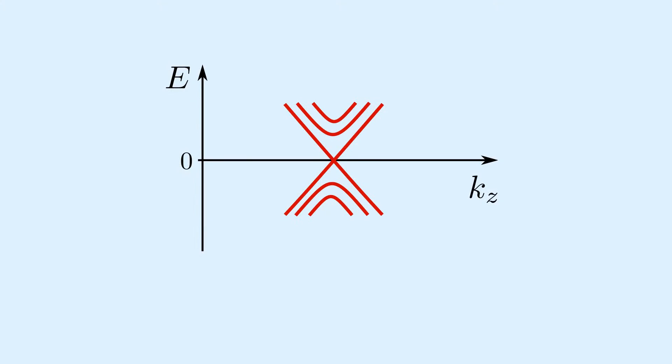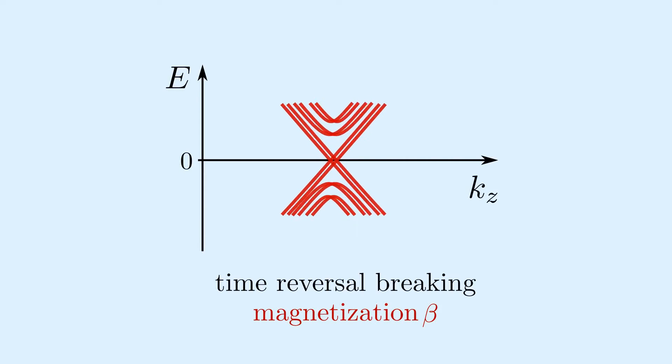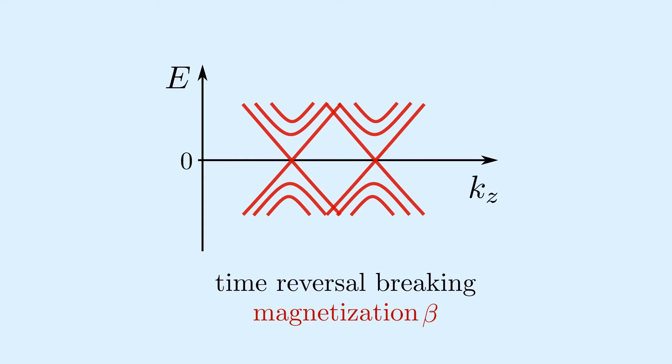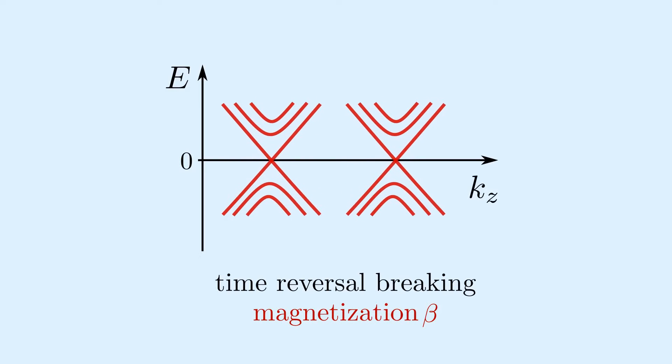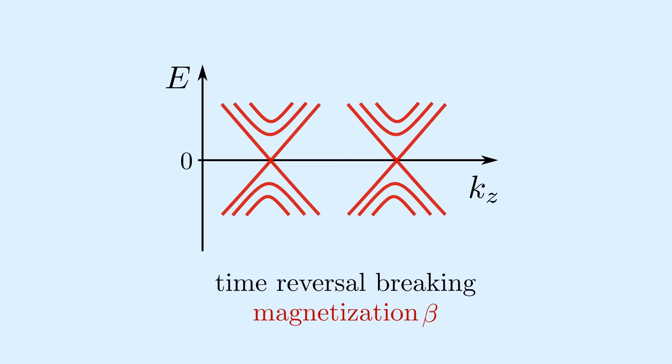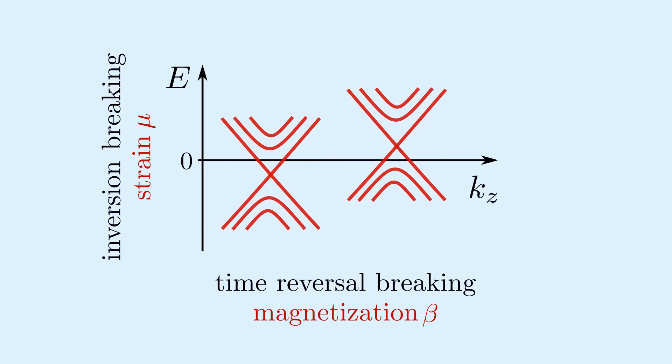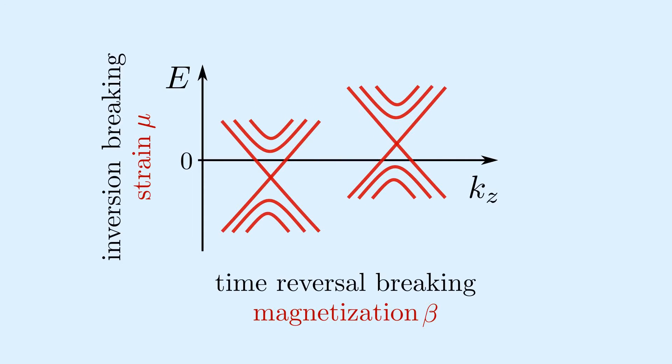A Weyl semimetal can be created from a Dirac semimetal by breaking time-reversal symmetry. This can, for example, be done by an internal magnetization. We have another control knob. We can break inversion symmetry by strain, shifting the cones in energy in opposite directions.